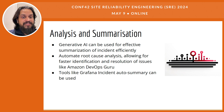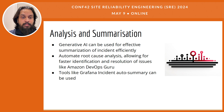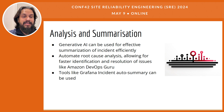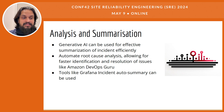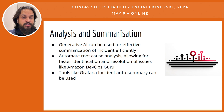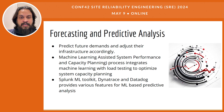Grafana offers a feature called incident auto-summary, which is designed to help teams quickly comprehend the details of an incident without sifting through overwhelming data manually. It uses algorithms to highlight significant changes and patterns that led to the incident, providing a summarized view of events in a clear and digestible format. These summaries are invaluable for post-mortem analysis and for keeping stakeholders informed. By automating the creation of incident summaries, Grafana helps ensure that all team members have a consistent understanding of each incident, which is essential for effective communication and collaboration during a crisis.